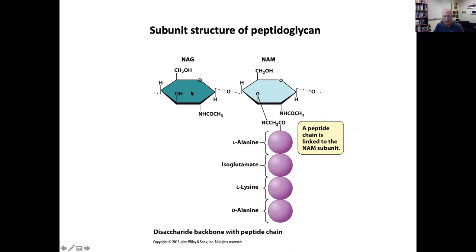So alternating N-acetylglucosamine and N-acetylmuramic acid — you can call these NAG and NAM. Attached to NAM is a set of amino acids. In this example of E. coli peptidoglycan, we have L-alanine, isoglutamate, L-lysine, and D-alanine.